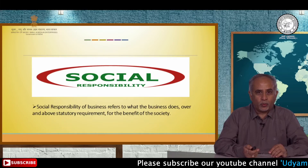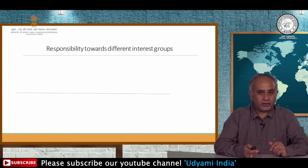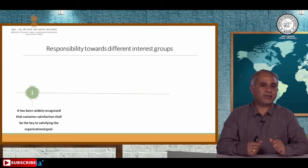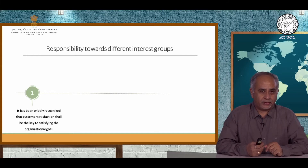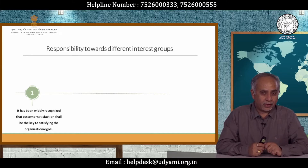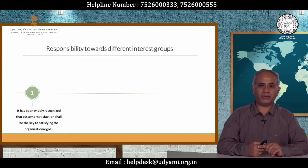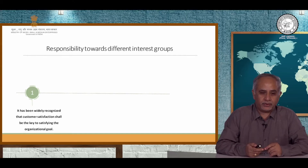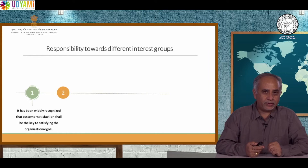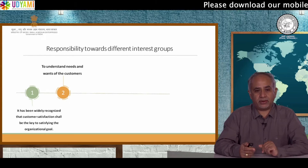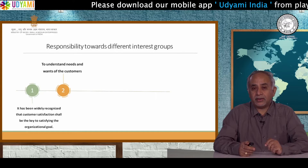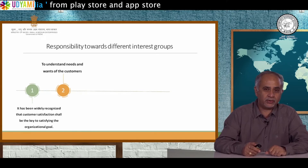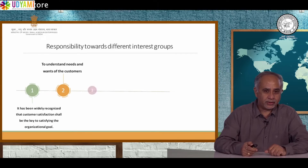Let us clearly identify the different social responsibilities that any organization is actually working upon. There are different interest groups which every business is dealing with. It is widely recognized that customers fall in the category of being one of the most important interest groups, because every business is working to satisfy its customers. So the first and primary responsibility of any business lies towards its customers — understanding what exactly a customer requires and what basic requirements the business is trying to fulfill.